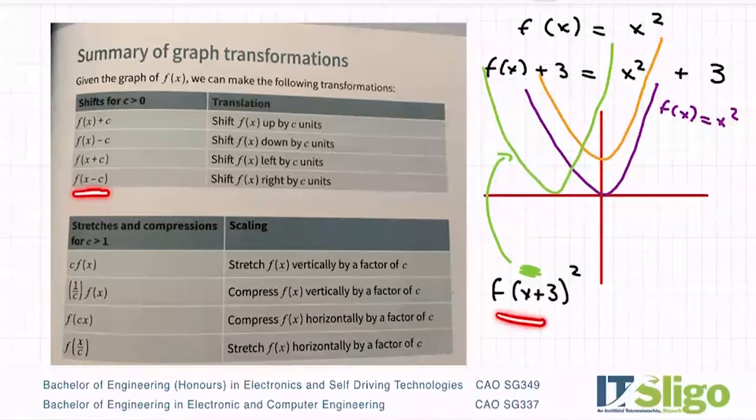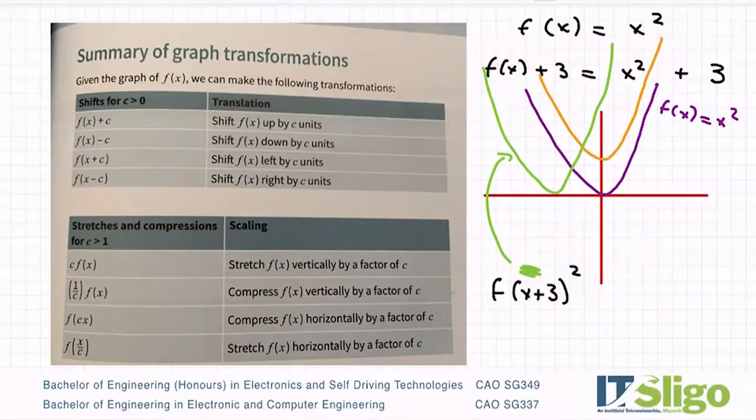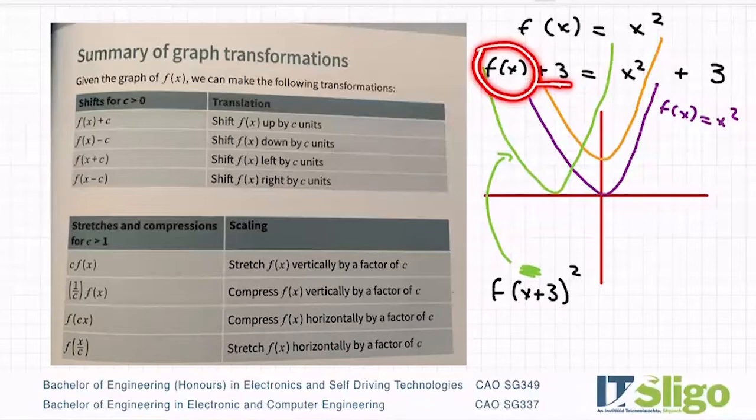And in the same way, if I had f(x - 3)², it would shift it to the right by three units. If I had f(x) - 3, not in the brackets, the brackets are closed, it would shift it down by three units. So if it's within the brackets, it shifts it left and right, or shifts it horizontally. And if it's inside the brackets, it goes the opposite way to the sign. If it's outside the brackets, so just a plus or minus number onto f(x), it shifts it up or down, or vertically, and it will shift it in the direction of the sign. So that is graph transformations, shifting up and down.